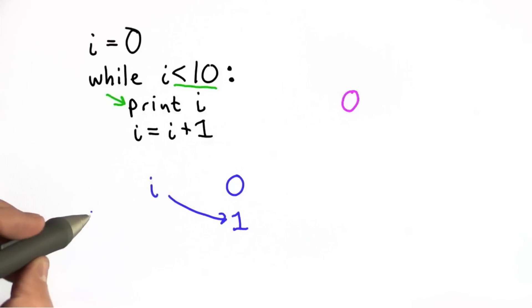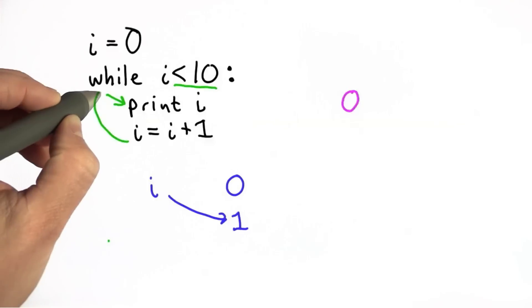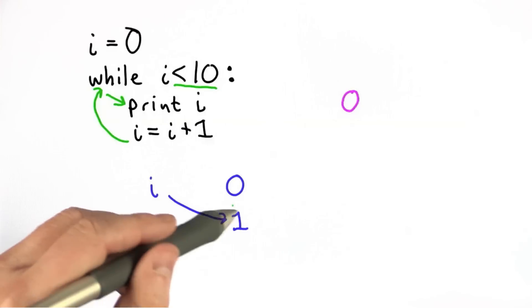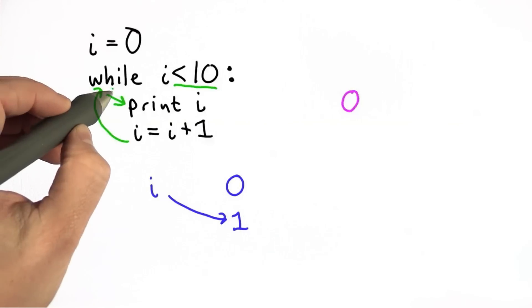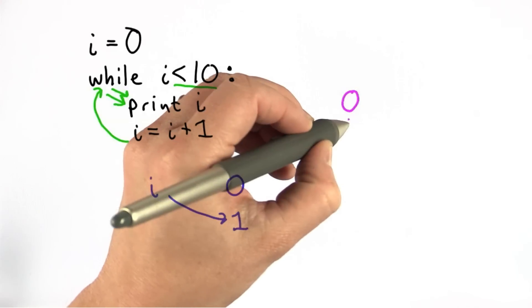So if it was an if, we'd be done now. But because it's a while, we keep going. We go back. Test again if i is less than 10. Now the value of i is 1, which also is less than 10. So we continue. Go to the block again. We're going to print i. This time we'll see the value of 1.